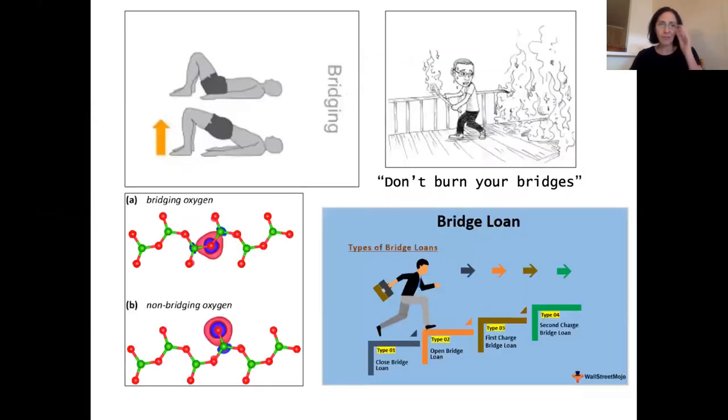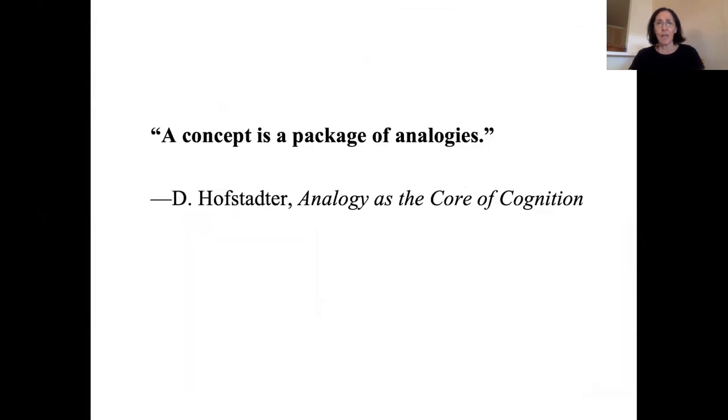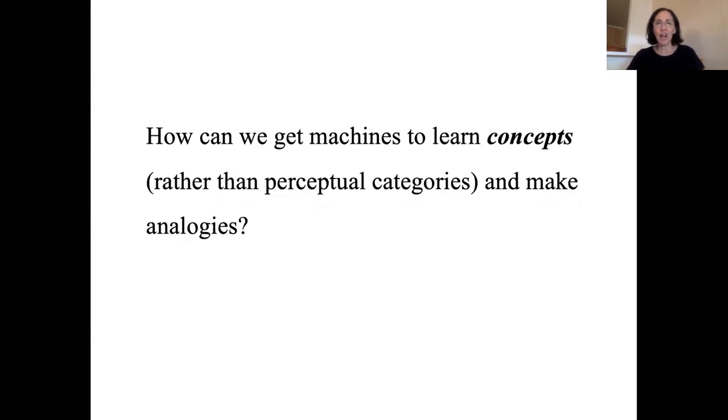You can just go on and on. There's all kinds of abstract notions of bridges. This is really what underlies Hofstadter's view that analogy is really the core of cognition. He defined a concept as a package of analogies. That's very different from a perceptual category, where we're able to have some space of like ImageNet has 1000 different categories. It's hard to go from one part of that space to another, as we saw in my examples earlier, whereas a concept is a much richer kind of cognitive entity. So how is it that we can get machines to learn concepts rather than perceptual categories, and to make these kinds of analogies that underlie human ability for abstraction.